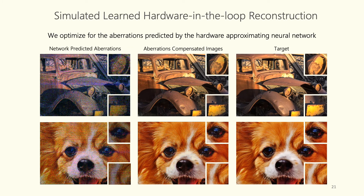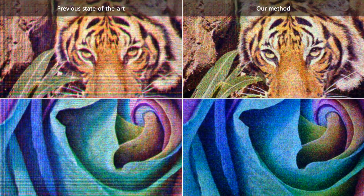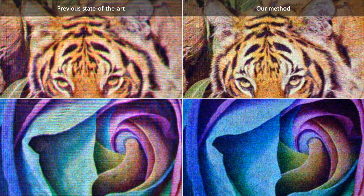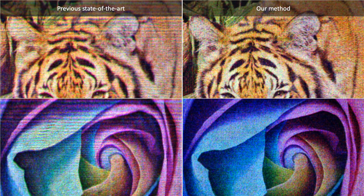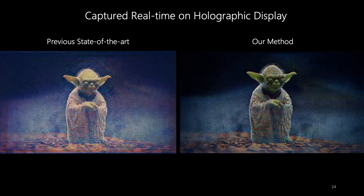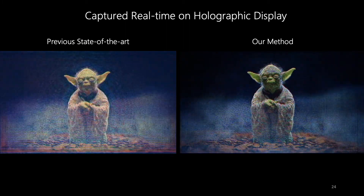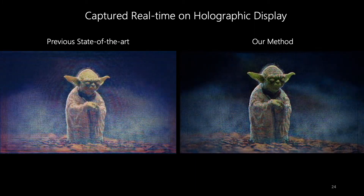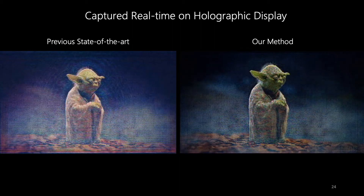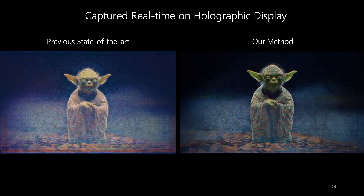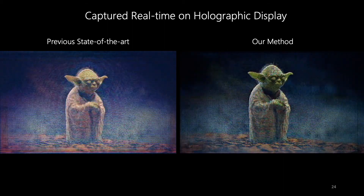Our network was trained to learn a completely uncalibrated hardware display. To further validate our method, we test it on a real prototype holographic display. Comparing with the previous state-of-the-art Wirtinger holography approach, our method eliminates severe artifacts such as ringing and boosts overall contrast. As shown in a live captured video, using our approach the effects of zeroth-order undiffracted light can be eliminated completely, significantly improving contrast and enabling true black regions and subtle effects such as smoke.